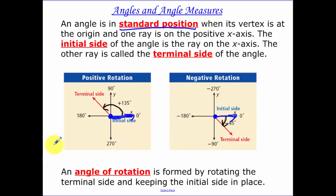An angle of rotation is formed by rotating the terminal side and keeping the initial side in place. A positive rotation rotates counterclockwise and a negative angle rotates clockwise.